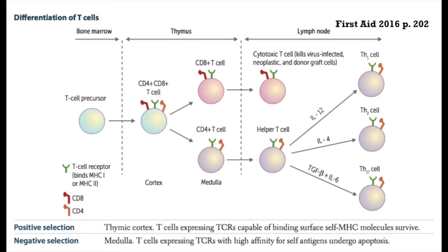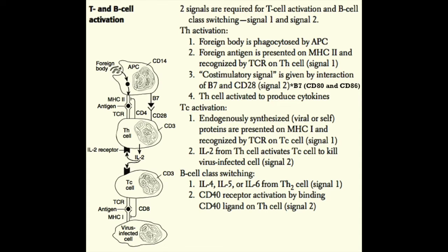Once tested and assigned as CD8 or CD4, naive T cells leave the thymus and migrate to lymph nodes. T cell activation is a two-step process requiring two signals — a control mechanism to keep these cells, the generals of the immune response, in check. Signal 1 is the interaction of the MHC molecule holding the peptide with the TCR-CD3 complex: the peptide must be specific and the MHC must be the right type.